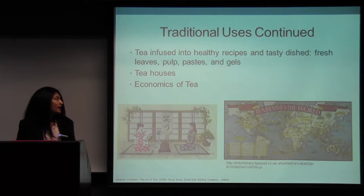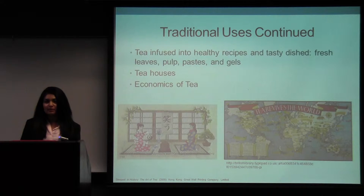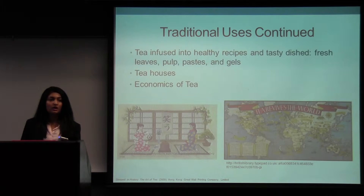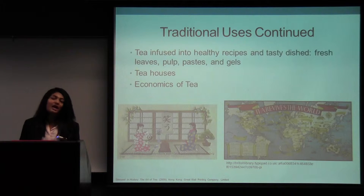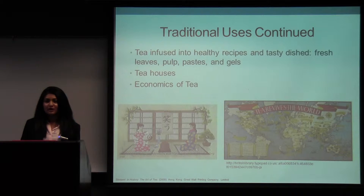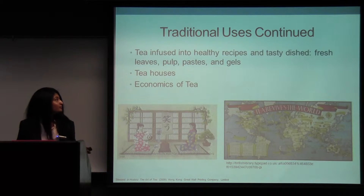It has a very interesting history. For example, one of the reasons India was colonized was because the British were looking for another place to grow tea to out-compete China. Also, the opium trade evolved around tea as well.